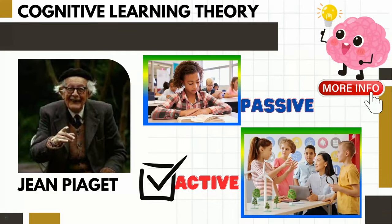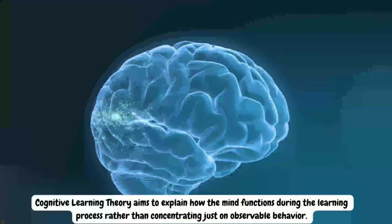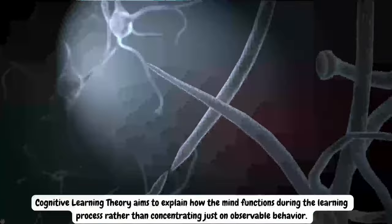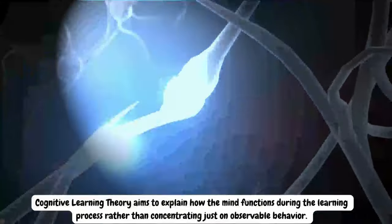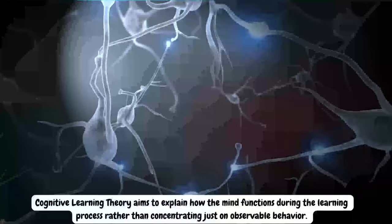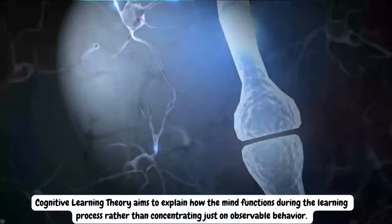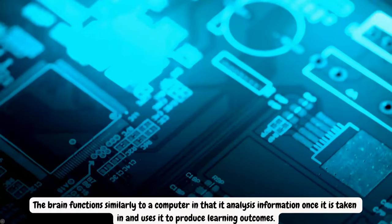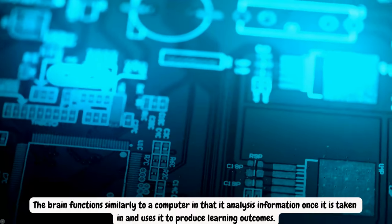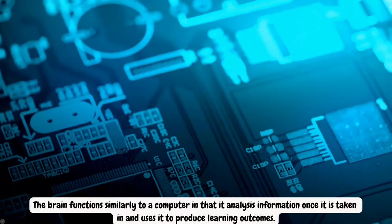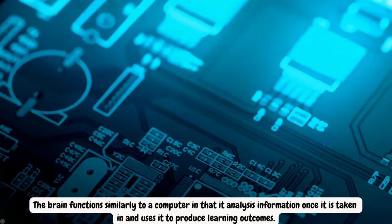The second theory is the Cognitive Learning Theory. The work of Jean Piaget, who challenged the notion that learners are passive and merely respond to environmental stimuli, is a major source of inspiration for this theory. Cognitive Learning Theory aims to explain how the mind functions during the learning process. The brain functions similarly to a computer in that it analyzes information once it is taken in and uses it to produce learning outcomes.